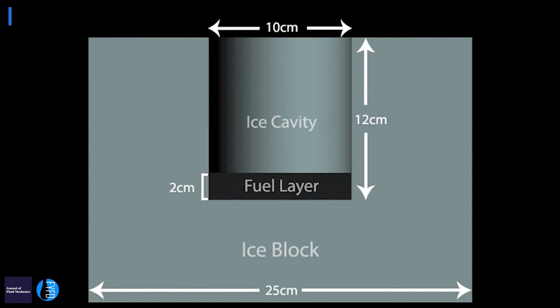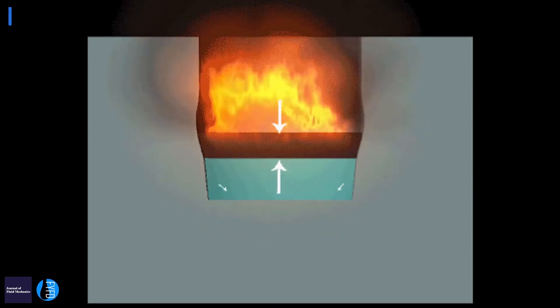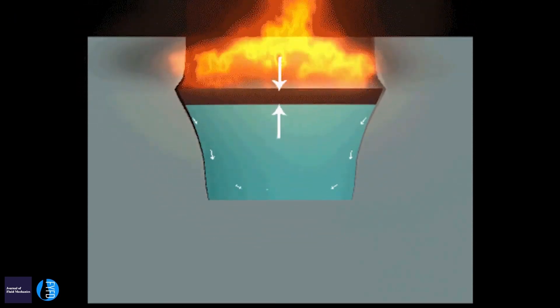The other effect is that because of the higher density of water, that melt water will fall down. Now you have an increasing level of fluid because of that water accumulation underneath the oil, and that can cause different things.